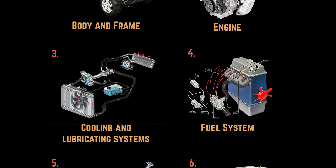Number three: cooling and lubricating systems. This ensures a consistent engine temperature — it works all around the car to keep it from overheating, and in return keeps the car from damaging all of the internal parts. Number four: the fuel system. This provides a combustible air-to-fuel mixture to power the engine. There is a correct air-to-fuel ratio in your car that keeps a correct measure to burn it efficiently to get the most out of the fuel that you put in.